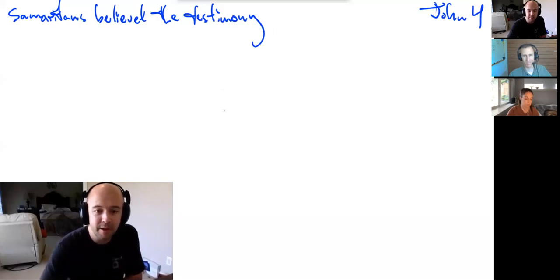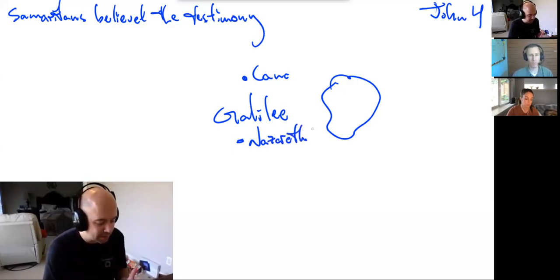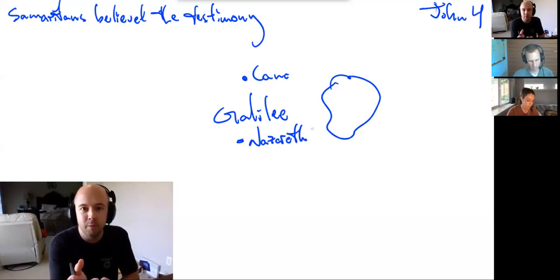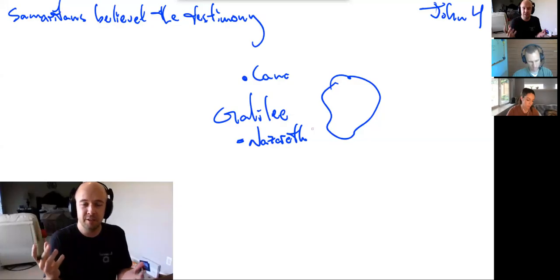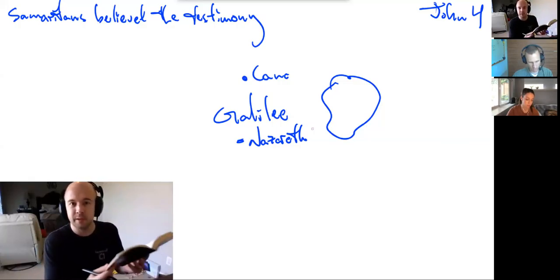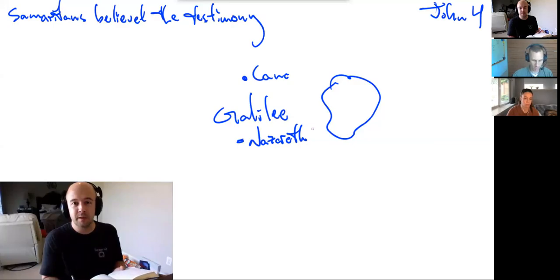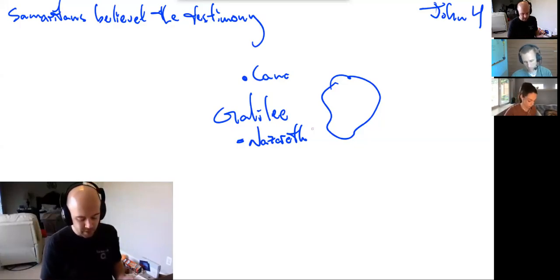Those who followed the woman out of the town of Sychar into the field to Jacob's well and told Jesus, please stay a while. We want to learn and know more. Now, I want to ask a question about his experience in Samaria. When Jesus was in Samaria, did he perform any signs as recorded here in the gospel of John? Not that we're recorded. Not that we're recorded. We don't see that. We don't see that he performed miracles and then they believed. What was the driving reason for the belief of the Samaritans? What was it that they said, and so we believe? The testimony of the woman?